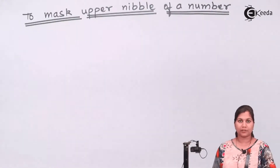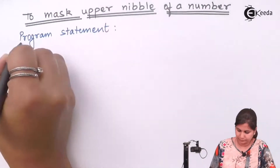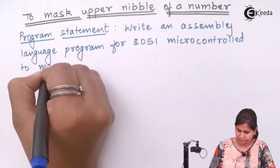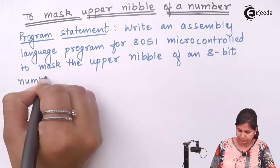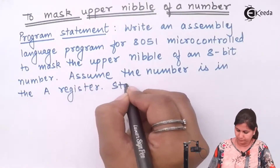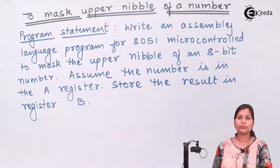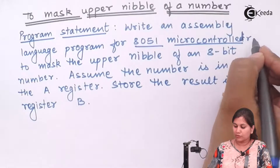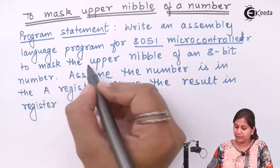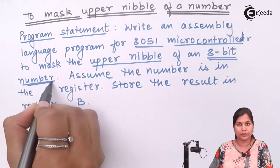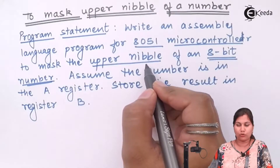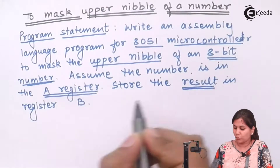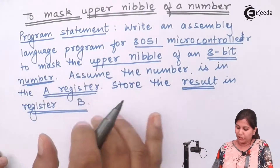First let us see the program statement. We have to write an assembly language program for the 8051 microcontroller to mask the upper nibble of an 8-bit number. We assume that the 8-bit number whose upper nibble we want to mask is in the A register, and after masking the upper nibble the result is stored in register B.